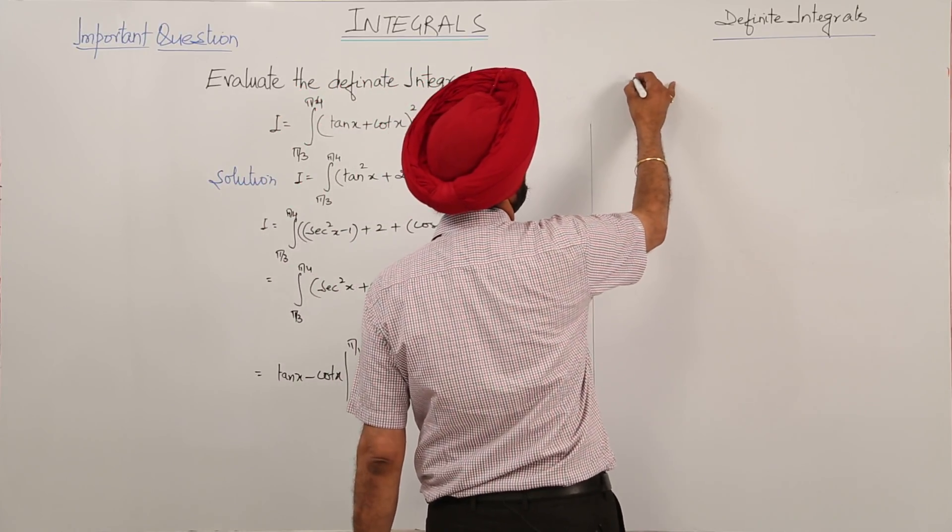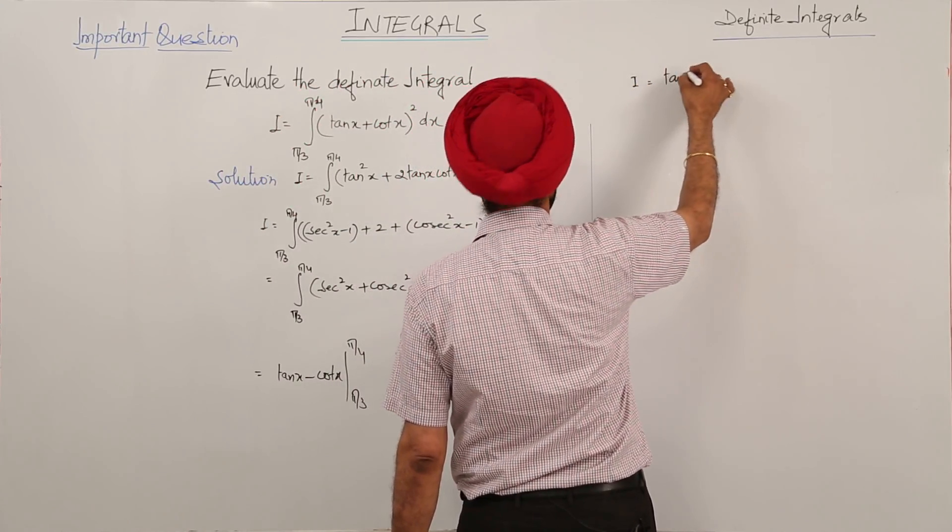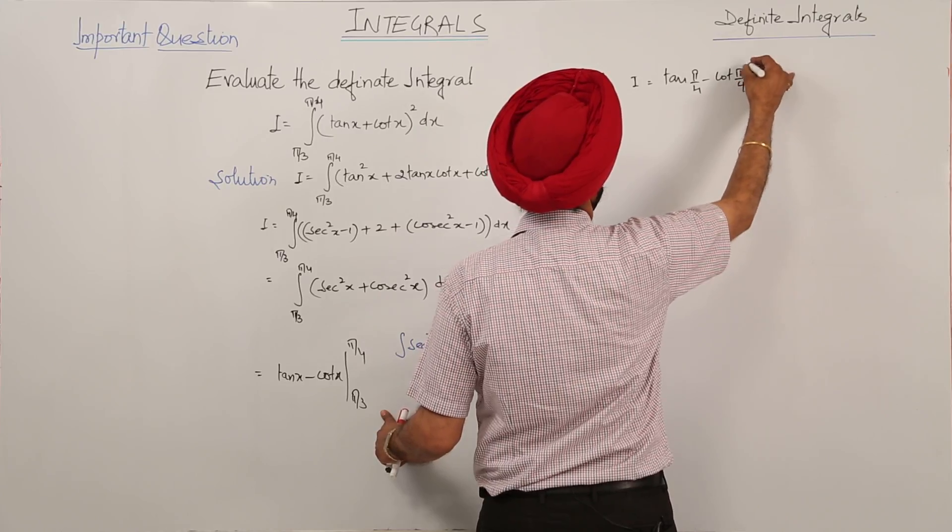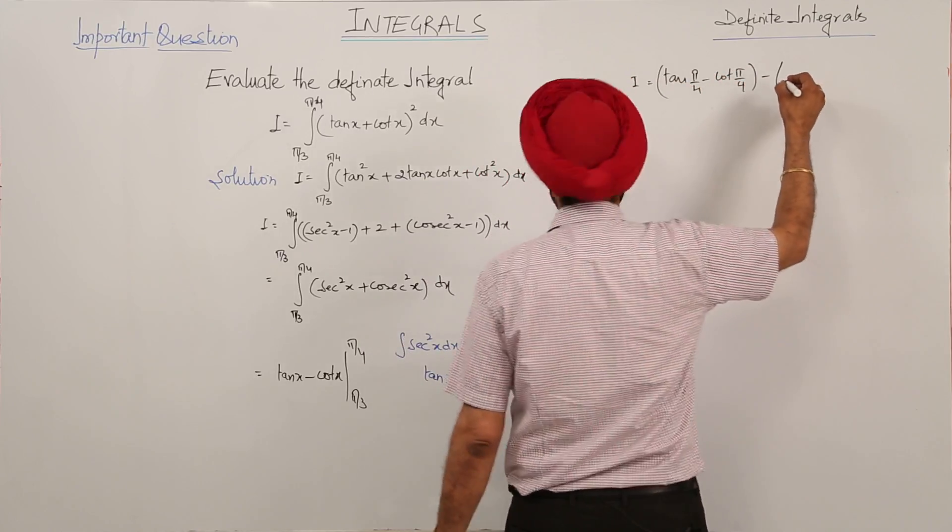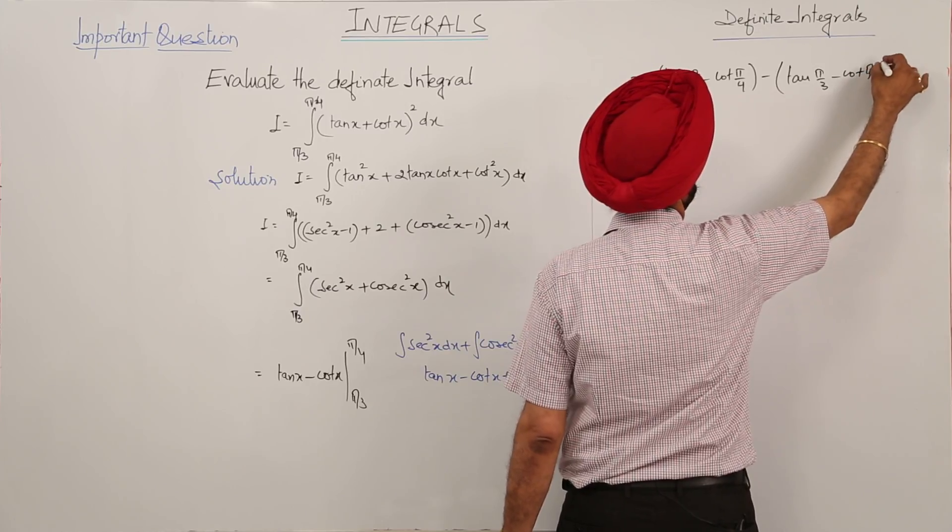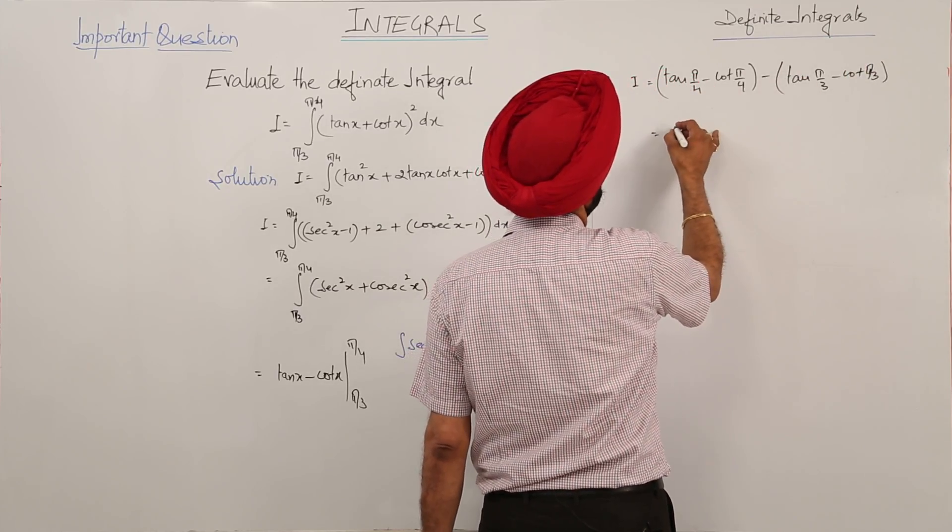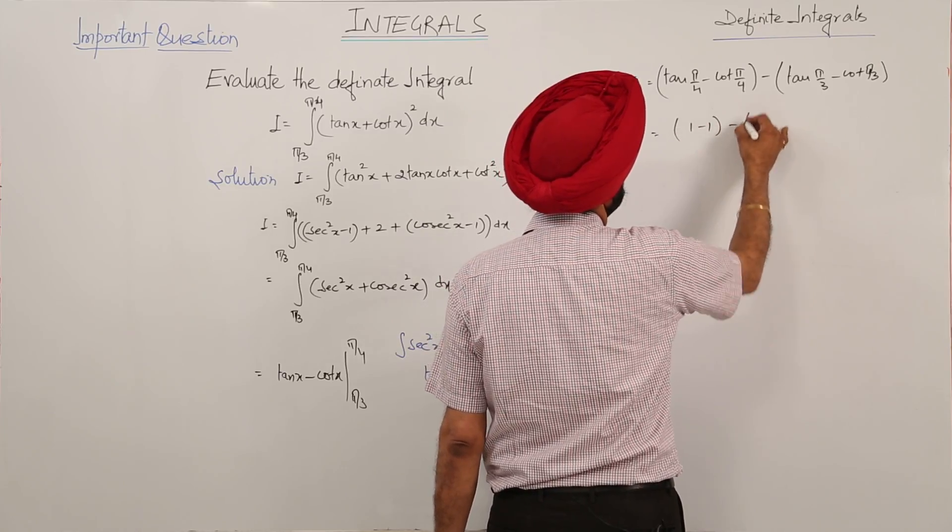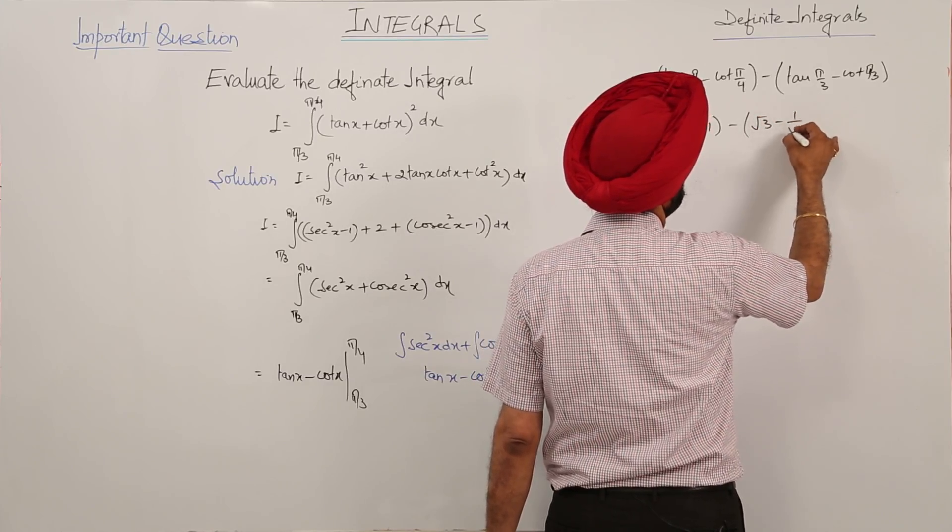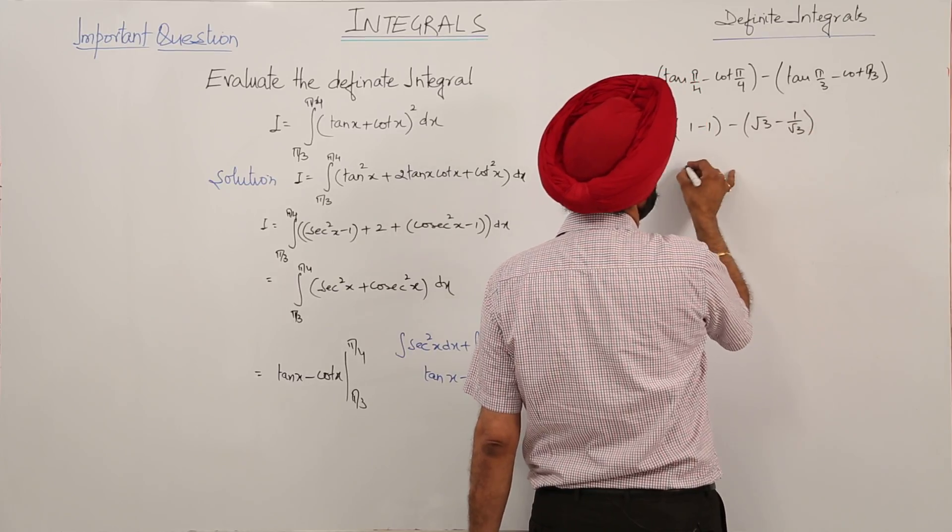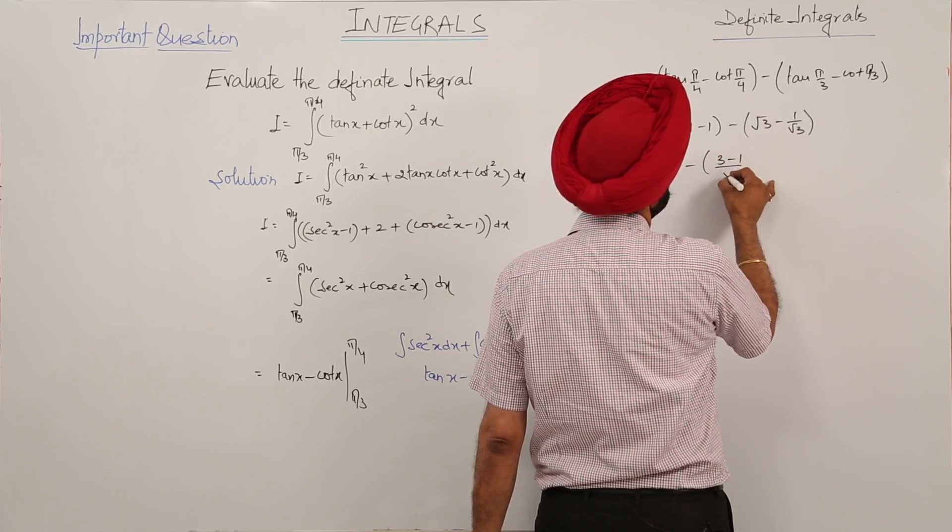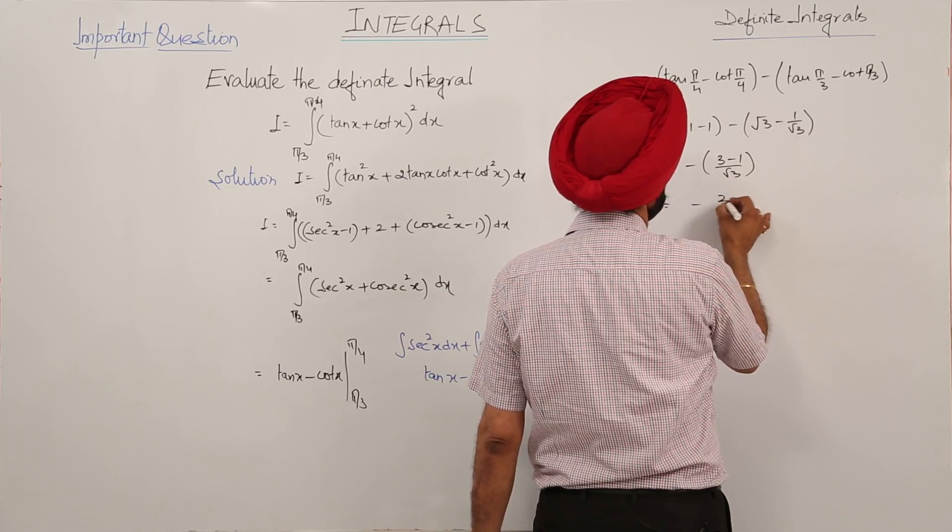Evaluating: tan pi by 4 minus cot pi by 4 minus tan pi by 3 minus cot pi by 3. This gives 1 minus 1 minus tan pi by 3, so root 3 minus 1 upon root 3, which equals minus 2 upon root 3 as the answer.